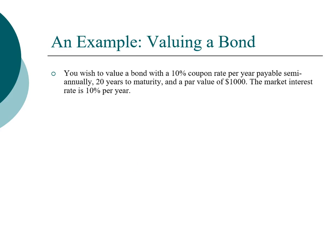In this example we have a bond with a 10% coupon. When we say this is a 10% bond, the 10% refers to the coupon rate. It has a par value of a thousand dollars and the market interest rate is 10%. Remember that the market interest rate is the yield to maturity.